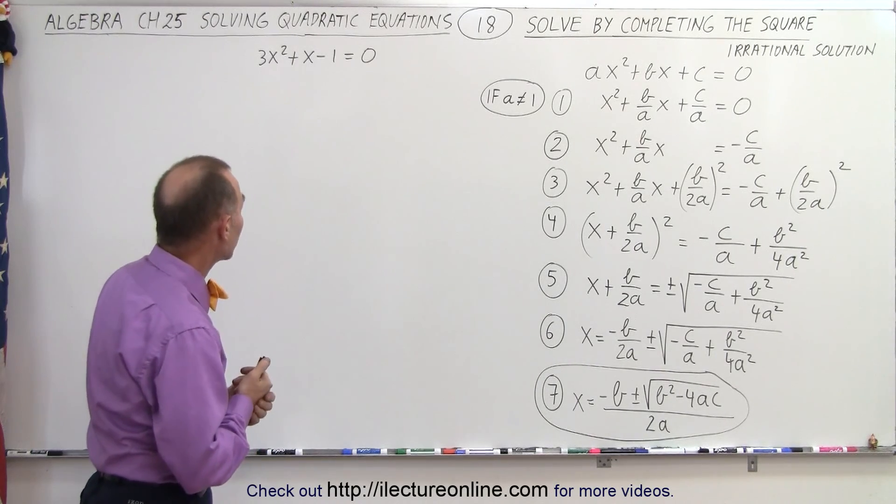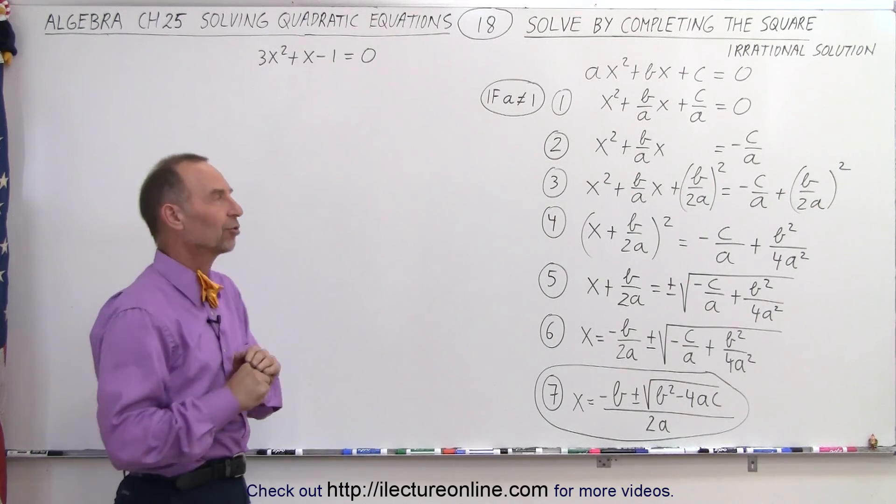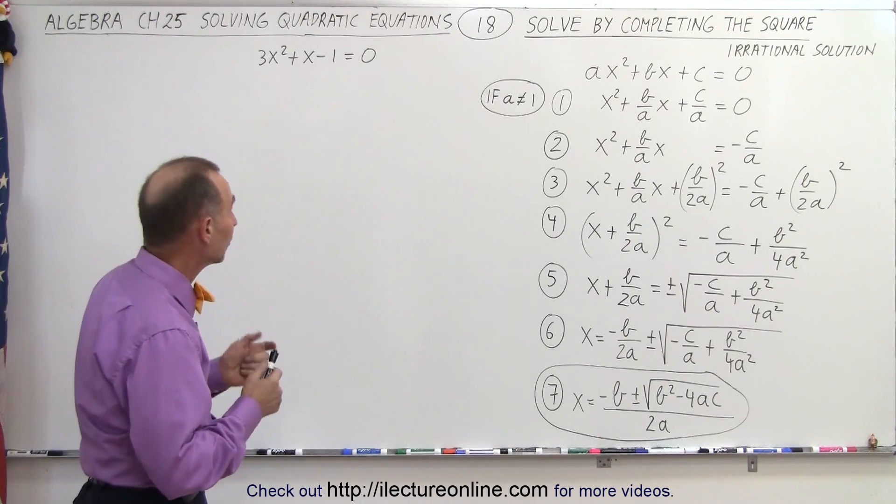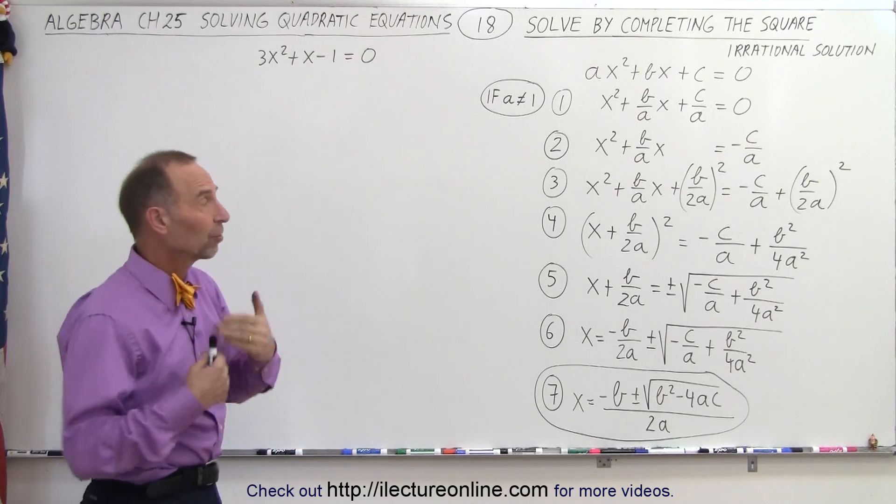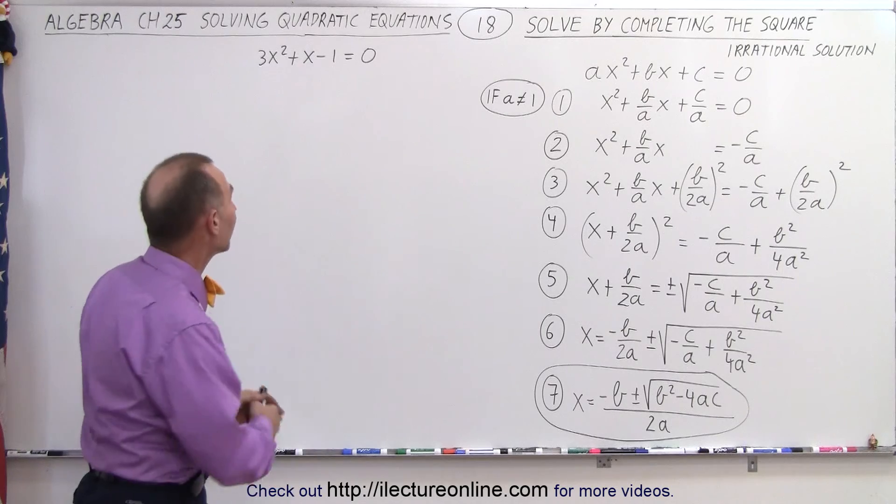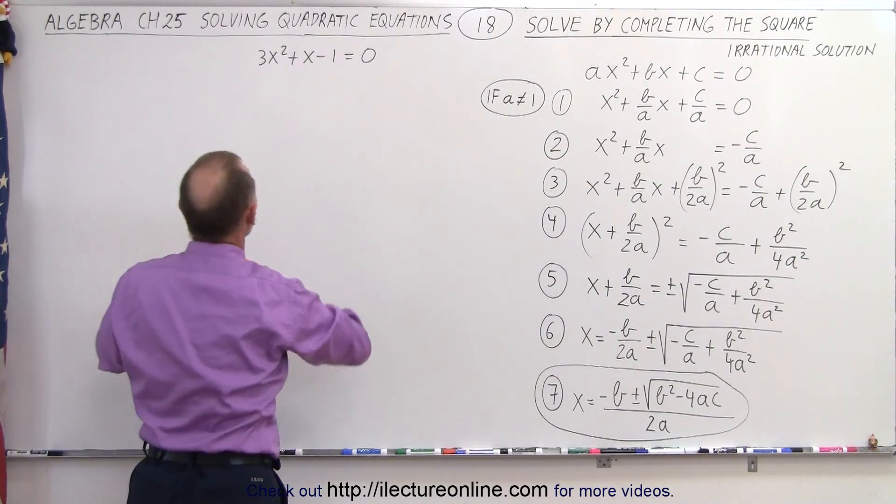So here's the equation 3x squared plus x minus 1, and you'll find out it doesn't have a rational solution. But again, we're going to follow the same steps as we did before. And notice that the coefficient in front of the x squared term is not equal to 1, so we have to include step 1 of the general case as well by dividing everything by the number 3 to get 1x squared. So when we do that, we get the following.